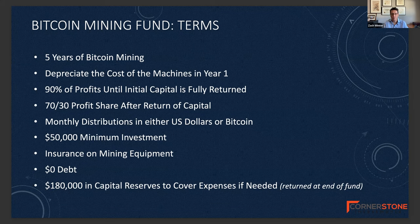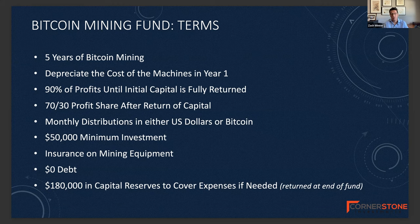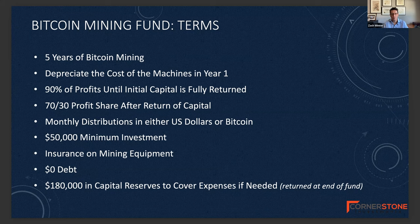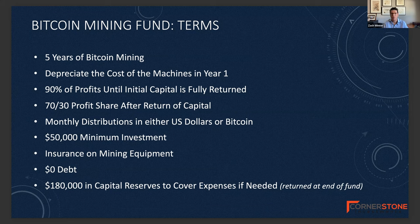The minimum investment amount is $50,000. A few safeguards built into this fund: all machines will be insured against casualty, loss, or theft. We're not taking on any debt — so each month after we pay our expenses, there's no debt payment before investors receive their distributions. We will also have a $180,000 capital reserve account to cover any expenses if needed. We projected Bitcoin would have to drop below $11,500 in order for us to start tapping into that reserve account. Today Bitcoin is trading at $24,000, so it would have to drop by more than 50% for us to need to tap into it. At the end of the fund, any amounts unused are returned back to the investors.